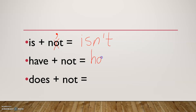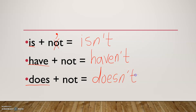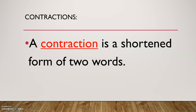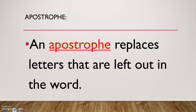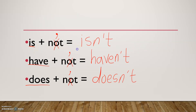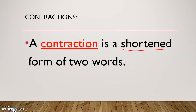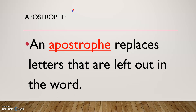Have plus not: the first word stays as is — we don't erase anything from it. So have plus not equals haven't. Does plus not equals doesn't. In all three examples, we cross the O and replace it with an apostrophe. So a contraction is a shortened form of two words. An apostrophe replaces the letters that are left out.